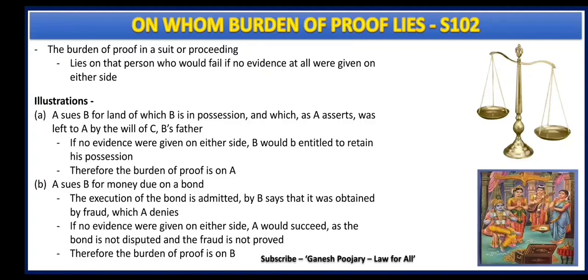Satyabhama shared her story with Narada, saying she wanted all of Krishna's attention towards her. Narada had a solution — he told Satyabhama to donate Krishna as dana to a Brahmin, and then give a lot of money to the Brahmin to buy Krishna back. By buying him back, she would get 100% of Krishna for herself alone. Satyabhama agreed and gave Krishna as dana to Narada. Narada happily took Krishna.